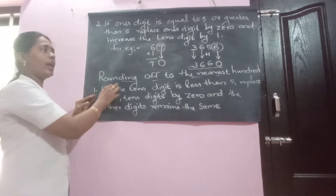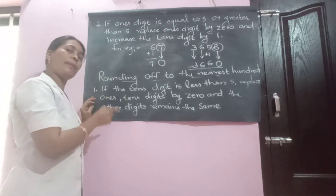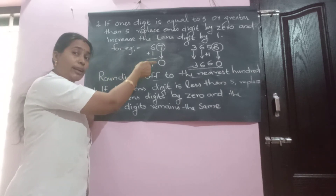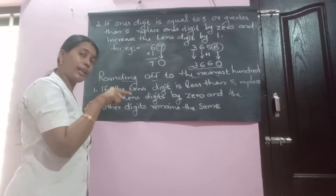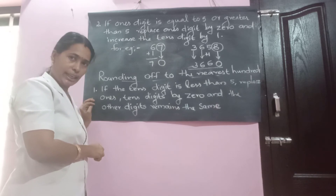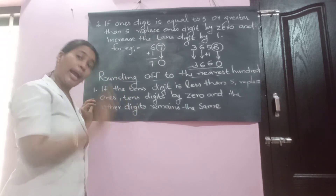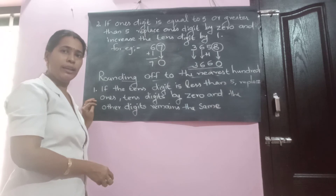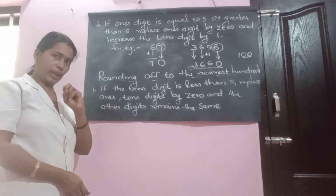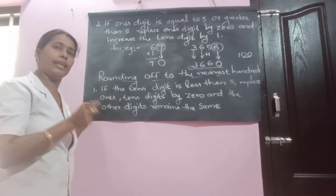The next topic is rounding off to the nearest hundreds. In this case, which number is to be circled? The ten's digit is to be circled. In the previous case — rounding off to nearest tens — we circled the one's digit. But here, we circle the ten's digit. After circling the ten's digit, replace both the one's digit and ten's digit by zeroes, because hundred has two zeros. Then think about the ten's digit: if it is less than five, the remaining digit has no change.